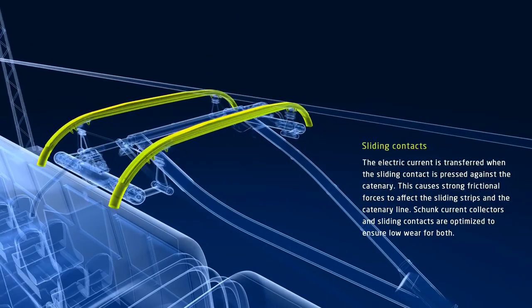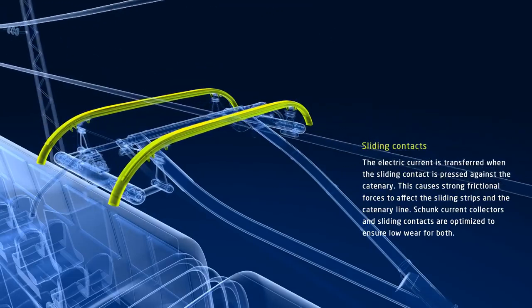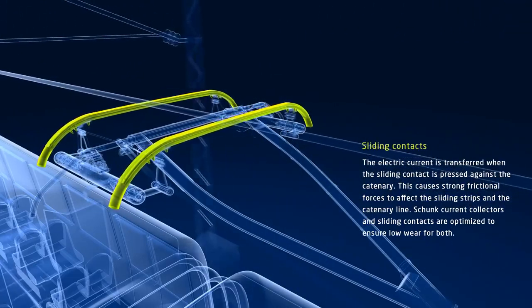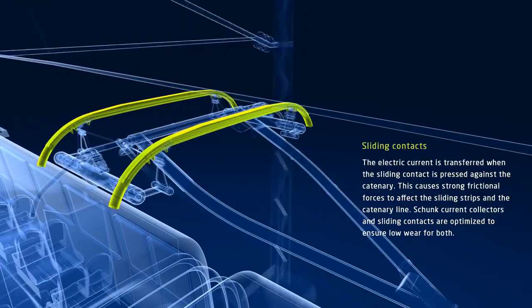Schunk has designed the structure and the material of the current collectors and sliding strips such that the sliding strip and the conducting wire are subject to a very low level of wear.